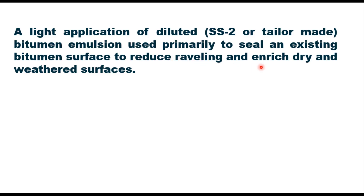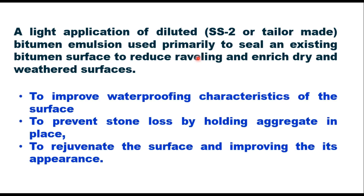SS2 or a tailor-made emulsion is used for fog seal. Fog seal is a method of incorporation of bituminous binder to an existing pavement to improve waterproofing characteristics of the surface, to prevent stone loss by holding aggregates in place, and to rejuvenate the surface and improve its appearance.